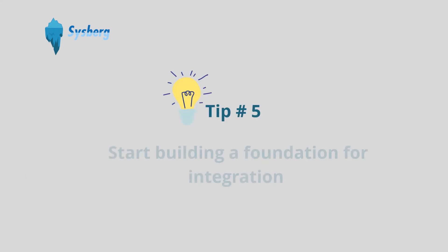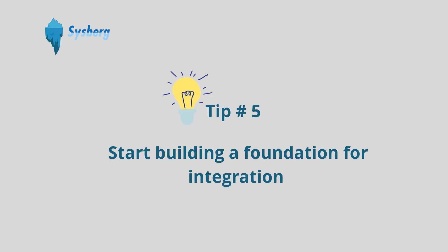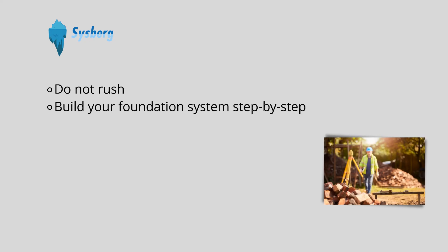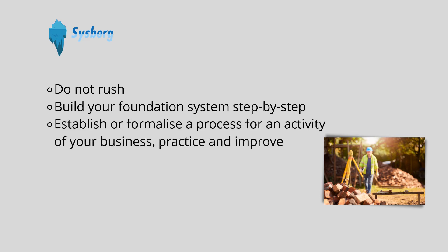Tip number five: start building a foundation for integration. Unless there is an urgency, do not rush. Build your foundation step by step using your nominated ISO standard as a guide. You can do this simply by first establishing or formalizing a process for an activity of a business, practicing that process, then improving it.